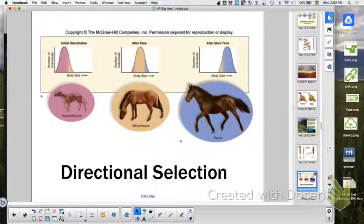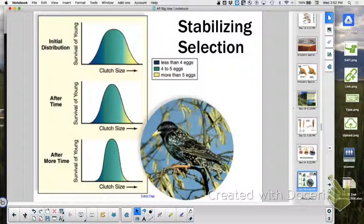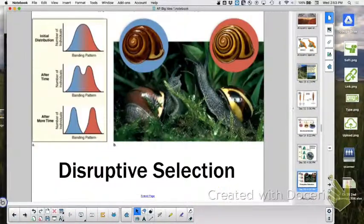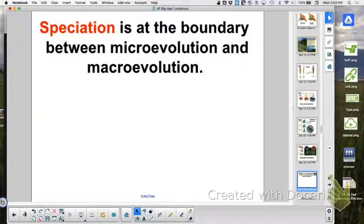Types of selection. Does directional selection support speciation? Yes, because you're going to favor one of the extremes. Does stabilizing selection favor speciation? No, because you're favoring the norm, where it only usually works this size. You don't want to have a baby too big, you don't want to have a baby too little, you want your baby to be right. Disruptive speciation, does this favor speciation? Yes, because you're favoring both extremes. One is good for this, one is good for that. Speciation is at the boundary between microevolution and macroevolution.